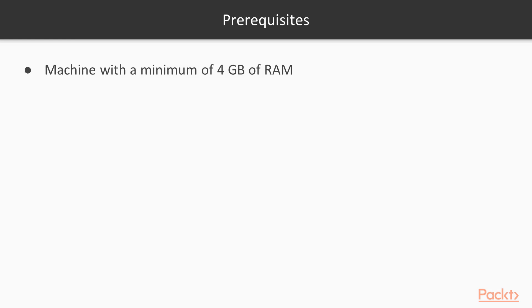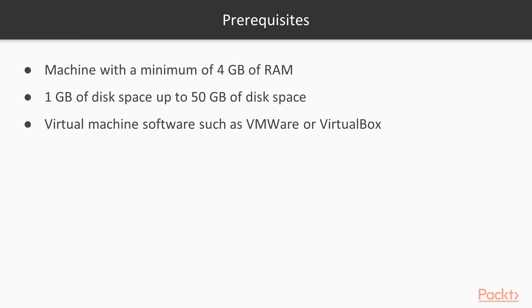In order to get started, you're going to need to set up a few things. You'll need a machine with about four gigabytes of RAM and between one and up to 50 gigabytes of disk space, depending on how many virtual machines you set up. For virtualization software, you can use either VMware or VirtualBox. I recommend VirtualBox because some of the virtual machines we can pull down are tailored specifically for it and will work much better than under VMware.